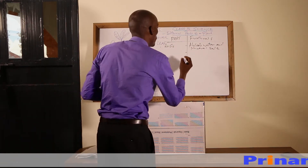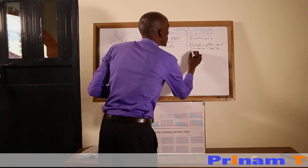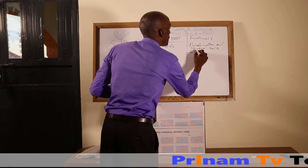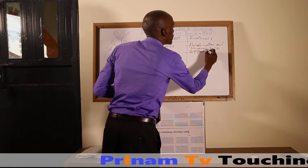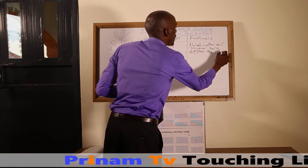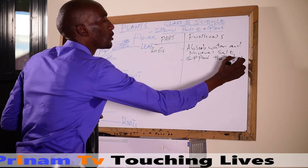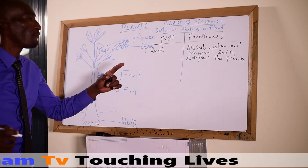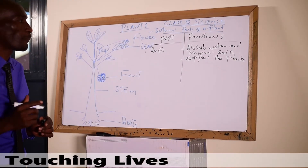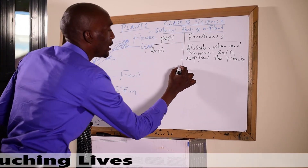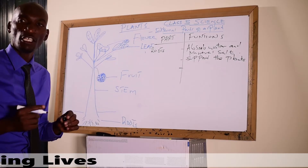Number two, roots are used to support the plant. So the second function of the roots is to support the plant.